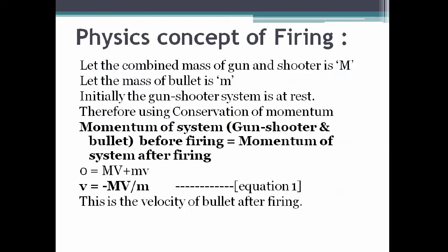Now let's understand the physics concept of firing. Let us assume that the combined mass of the gun and the shooter is capital M, and the mass of the bullet is small m. Initially, the gun-shooter system is in a state of rest. Therefore, using conservation of momentum, the momentum of the system before firing equals the momentum after firing. Since the velocity of both the bullet and the gun-shooter system is zero before firing, the total momentum on the left-hand side is zero.